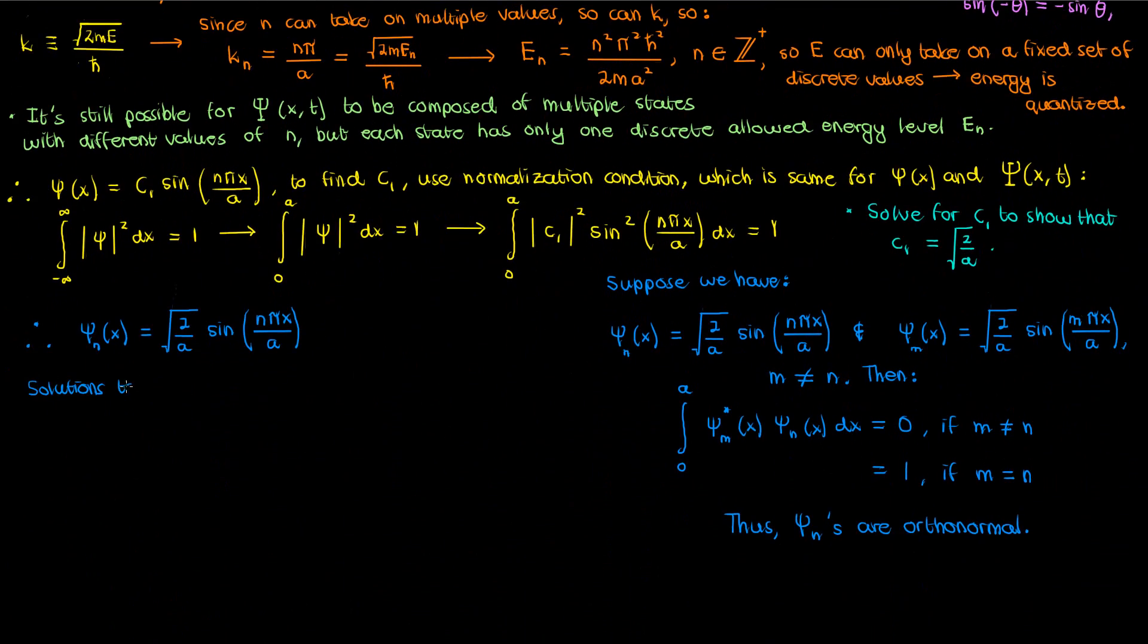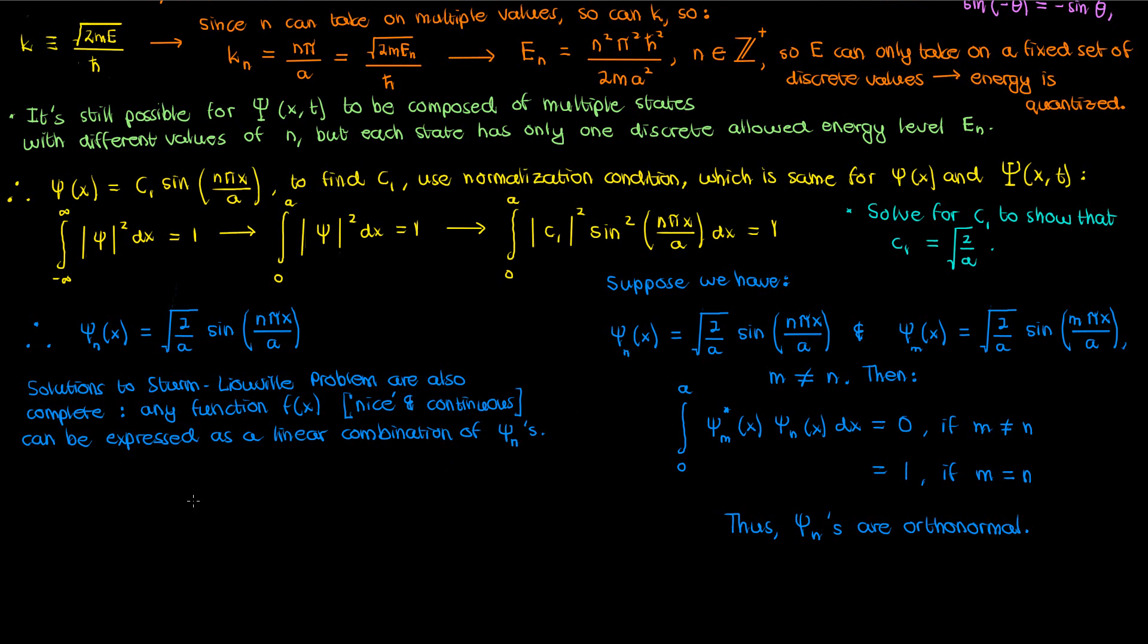The other part about the Sturm-Liouville problem is that its solutions are also complete, meaning that any nice and continuous function f of x can be expressed as a linear combination of the psi sub n's and this should make sense if you also know about the Fourier series. Any function, any nice enough function can be expressed as a sum of sines and cosines which is exactly what psi sub n represents.